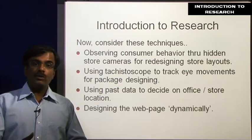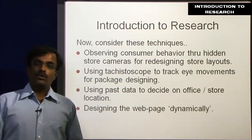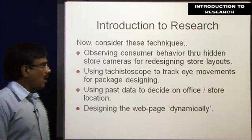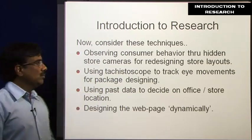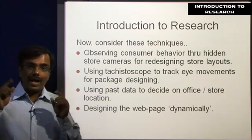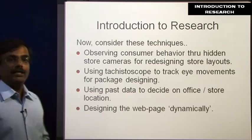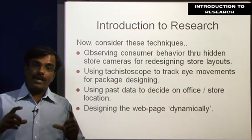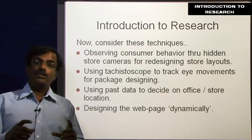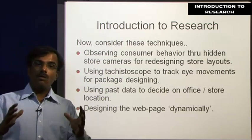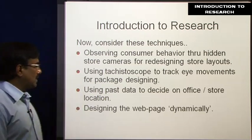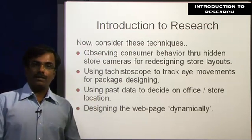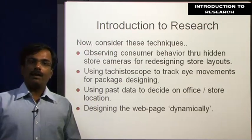Now let us look at some techniques. Observing consumer behavior through hidden store cameras for designing store layouts — how do consumers move within a store so that you can place appropriate products in appropriate areas? Or can we use a tachistoscope to track eye movements for package designing? Where should one place the logo, where should one place the contents of the package, where should one keep the price on the package? These are good research questions. We can also use past data to decide on office or store location.